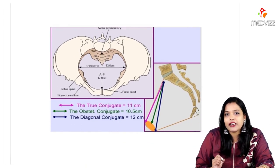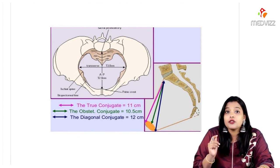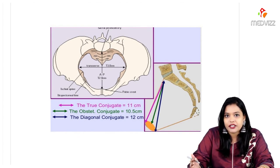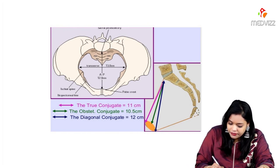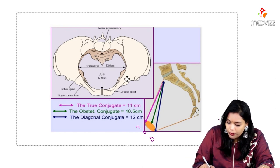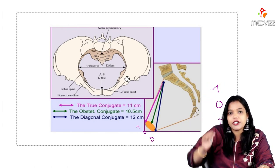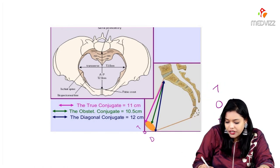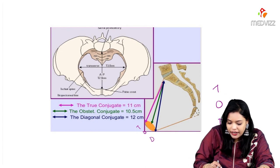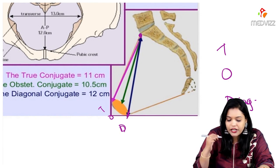The conjugates are mainly the anteroposterior diameter of the pelvic inlet. You have three conjugates: diagonal conjugate, obstetric conjugate, and true conjugate. How do I remember them? From below upwards, it is DOT. First is diagonal conjugate — from the lower border of pubic symphysis to sacral promontory.